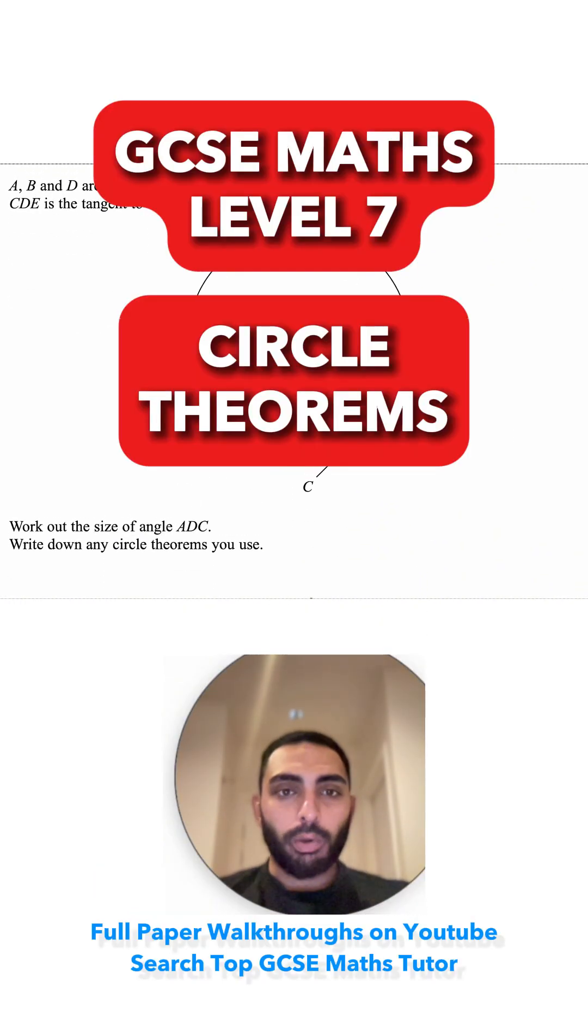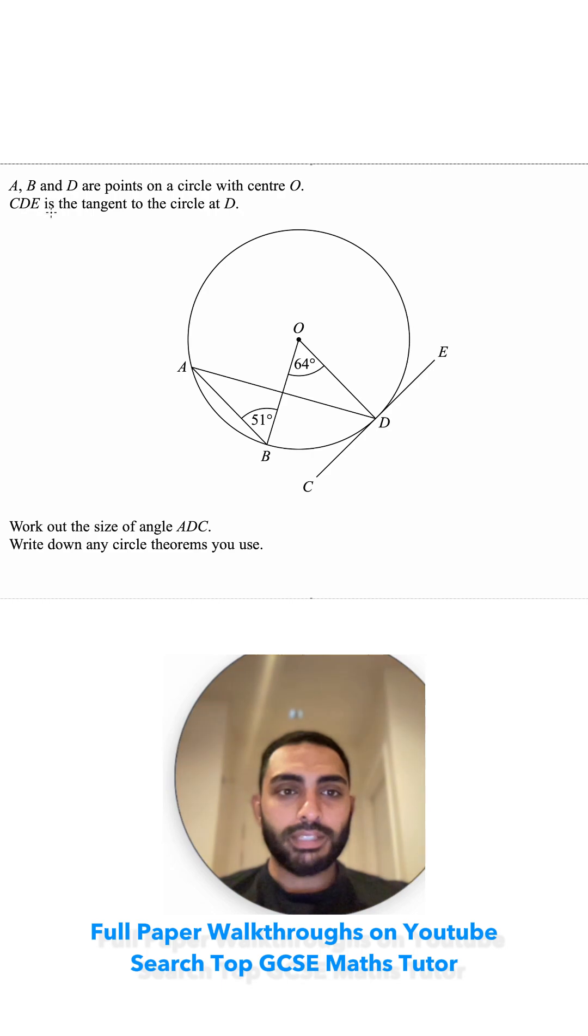Question 21. A, B and D are points on a circle with centre O. C, D, E is a tangent to the circle at D.